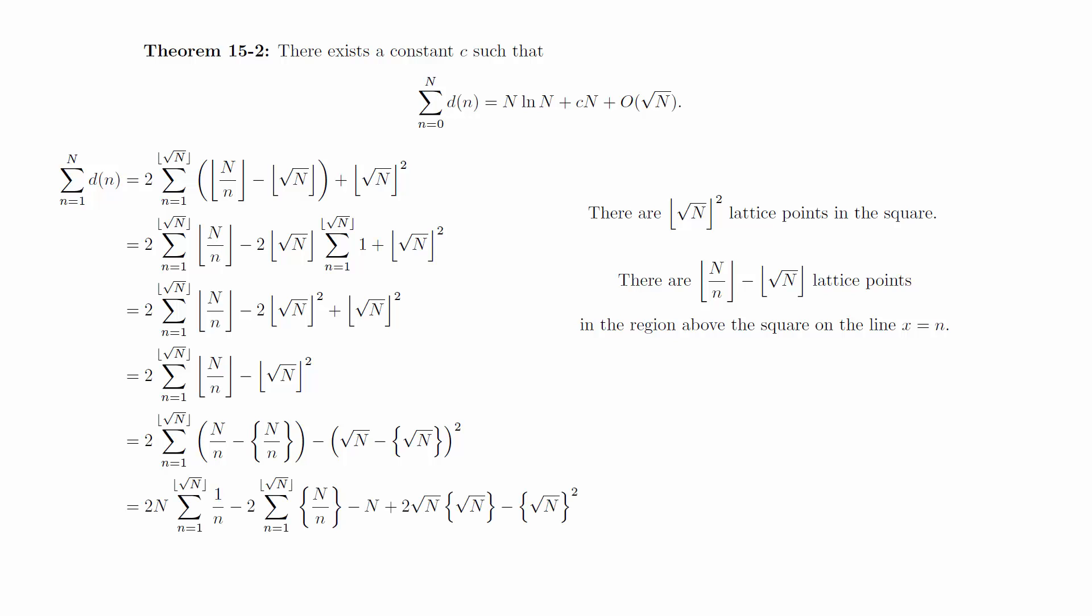From here we can start picking off the error terms. The second term is a sum of no more than root n terms that are no greater than 1, so this is o of root n. The fourth term is root n multiplied by a constant that's less than 1, so this is also o of root n. The last term is always less than 1, so this can be absorbed into the o of root n error.